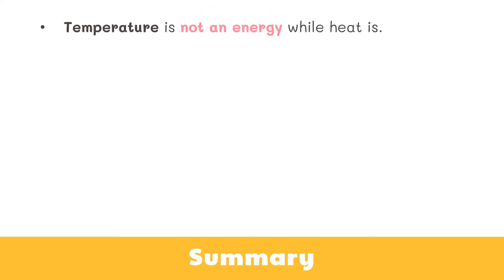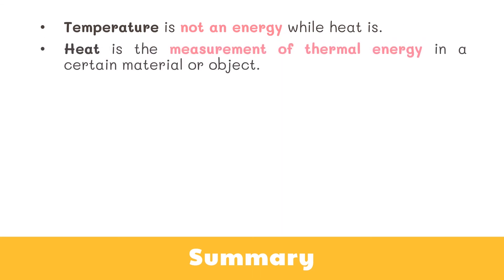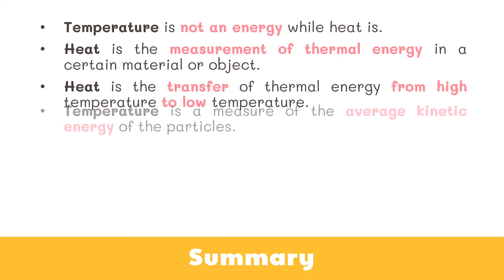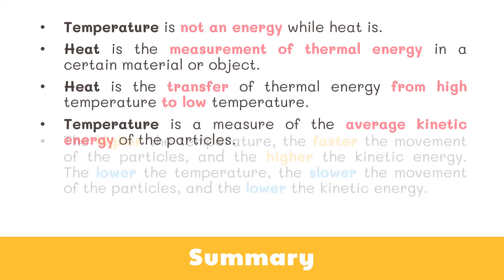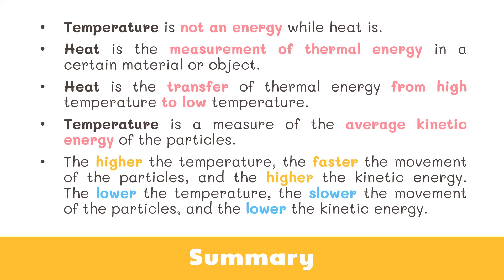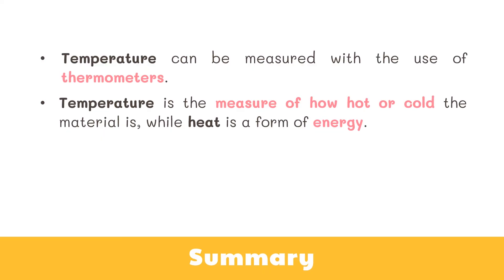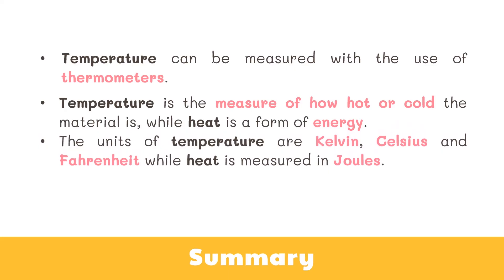Let's wrap things up. We learned that temperature is not an energy while heat is. Heat is the measurement of thermal energy in a certain material or object, and also the transfer of thermal energy from high temperature to low temperature. Temperature is a measure of the average kinetic energy of the particles — the higher the temperature, the faster the particles move and the higher the kinetic energy; the lower the temperature, the slower the movement and the lower the kinetic energy. Temperature can be measured with thermometers. The units of temperature are Kelvin, Celsius, and Fahrenheit, while heat is measured in joules.